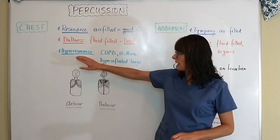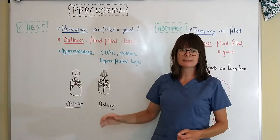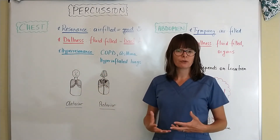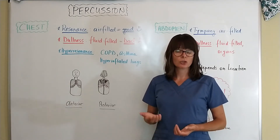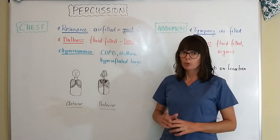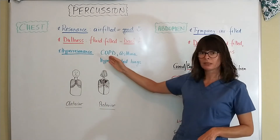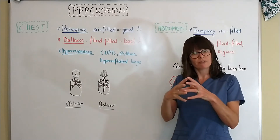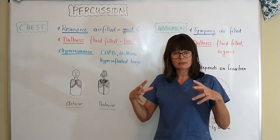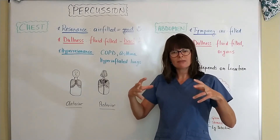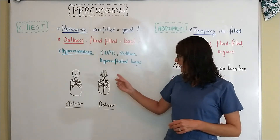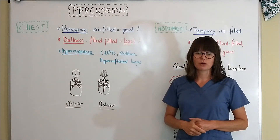There's another term called hyper-resonant, which means extra resonant or more air-filled than the lungs should be. Certain conditions cause hyper-resonant lungs, such as COPD, emphysema, and asthma, where the alveoli become very distended and the patient retains CO2. There's more air in there than expected, so it sounds extra hollow. This is because the lungs are hyperinflated.